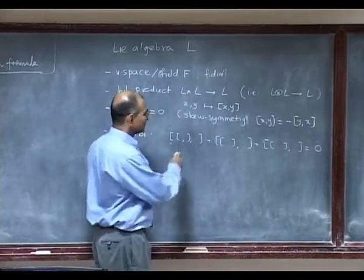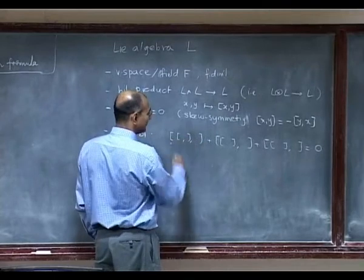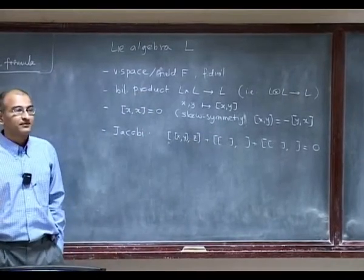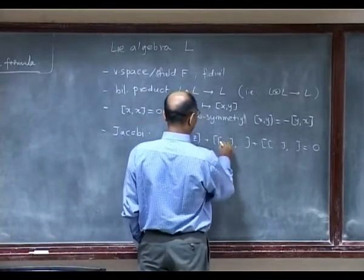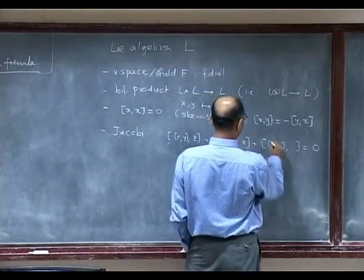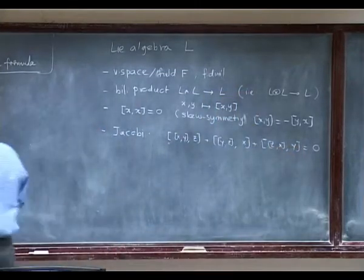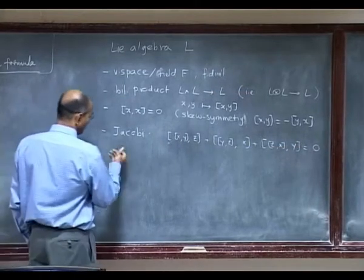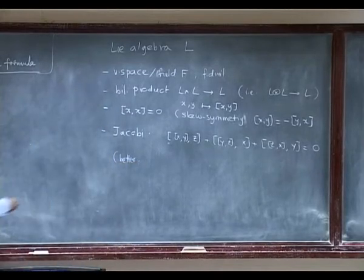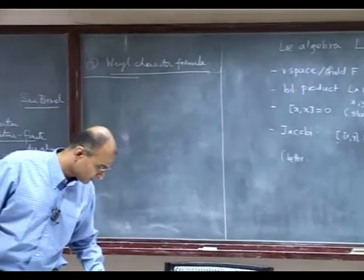And the Jacobi identity: I will write it the way it is done, but that is not how I think of it. This is the same format—you have a bracket inside a bracket on the left, and then you put x, y, z in cyclic permutation: [[x, y], z] + [[y, z], x] + [[z, x], y] = 0. This is all right, but maybe there's a better way to think of this, which we will shortly see. That is the definition of Lie algebra.